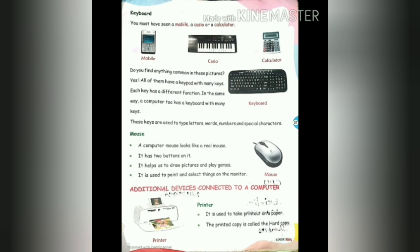The fourth part is the mouse. A computer mouse looks like a real mouse. It has two buttons on it. It helps us to draw pictures and play games, and it is used to point and select things on the monitor. This computer mouse also looks like a real mouse — it is small, has a tail, and has a right button and a left button. This mouse is used to draw pictures, play games, and select things.